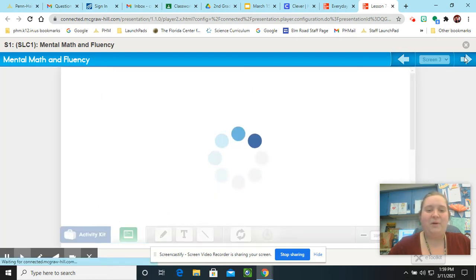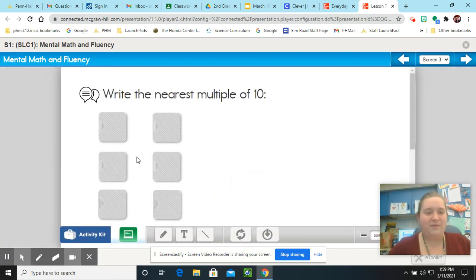All right. Let's look at one more page of examples of multiples of 10. 98. Let's think. What number is closest to 98 that ends in a 0? If you said 100, you are correct.